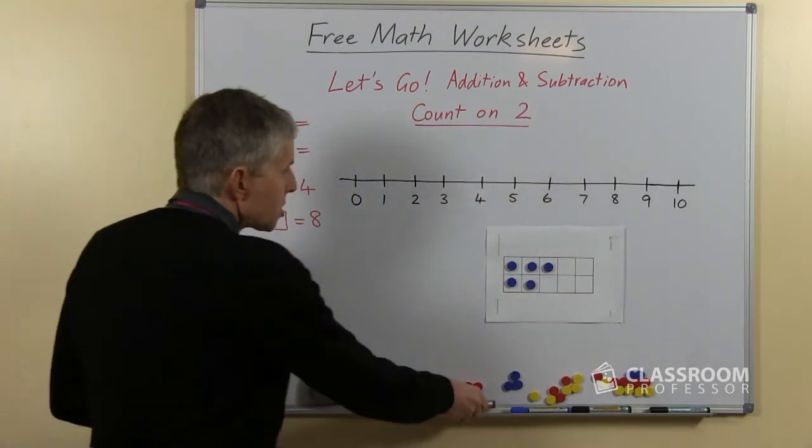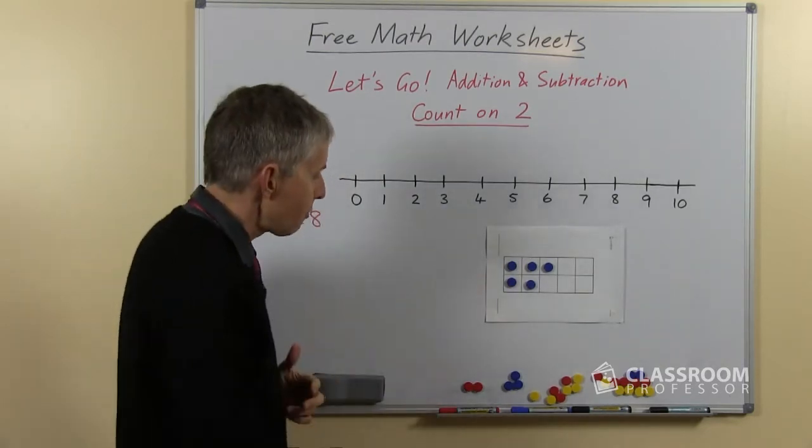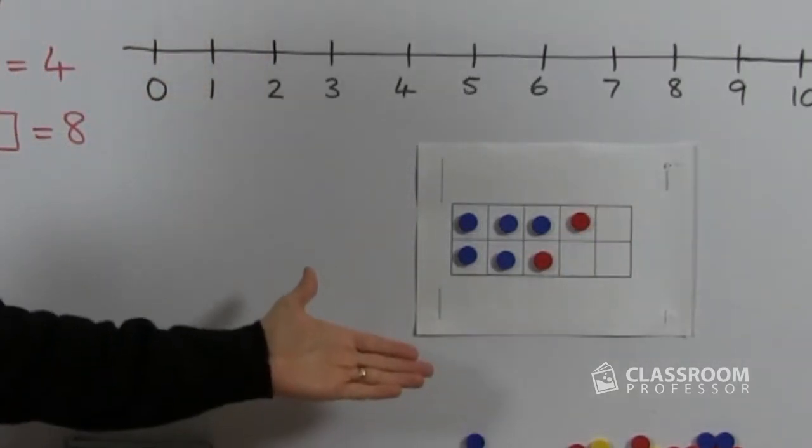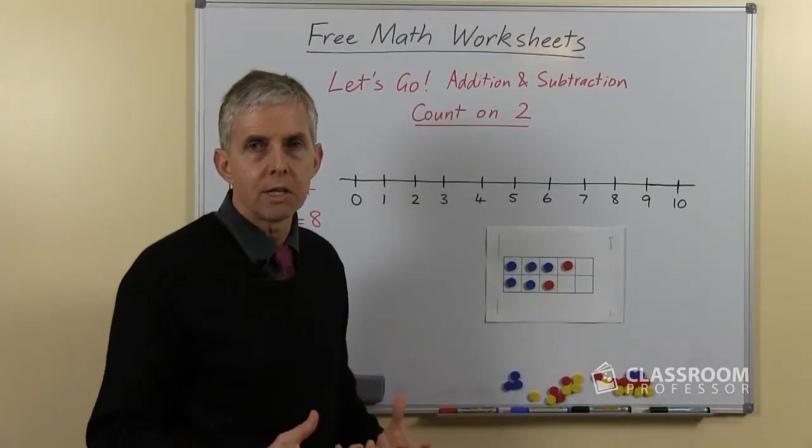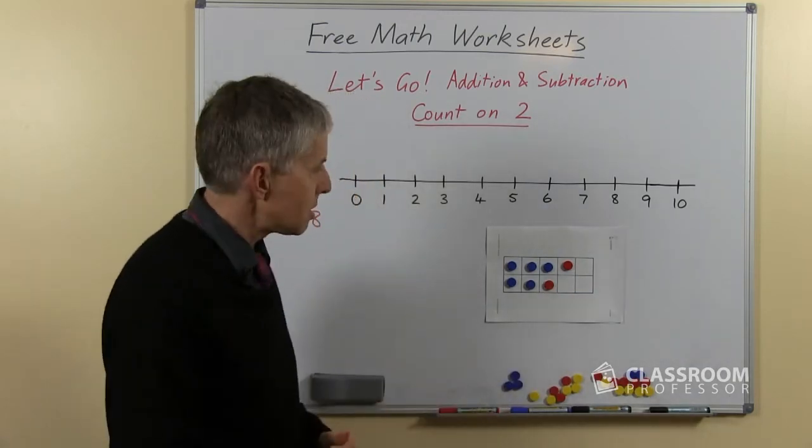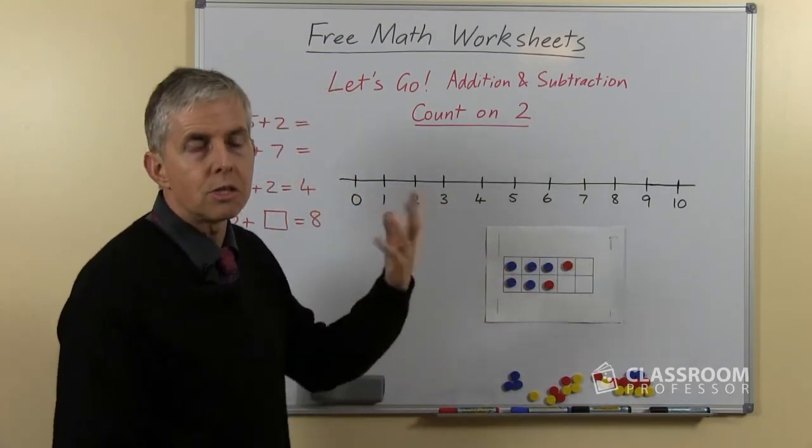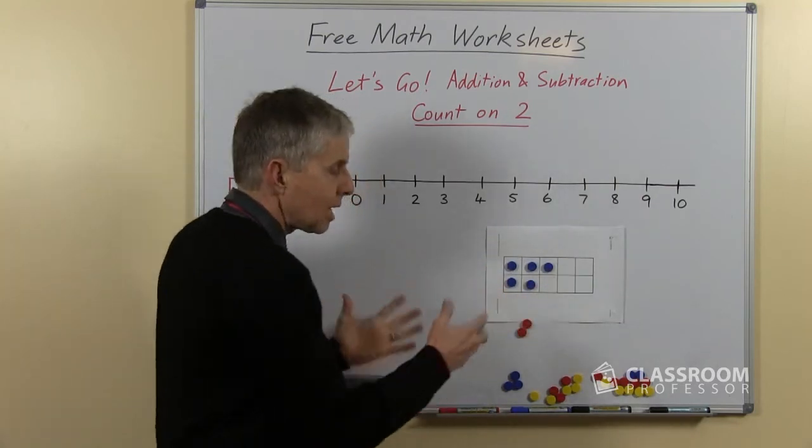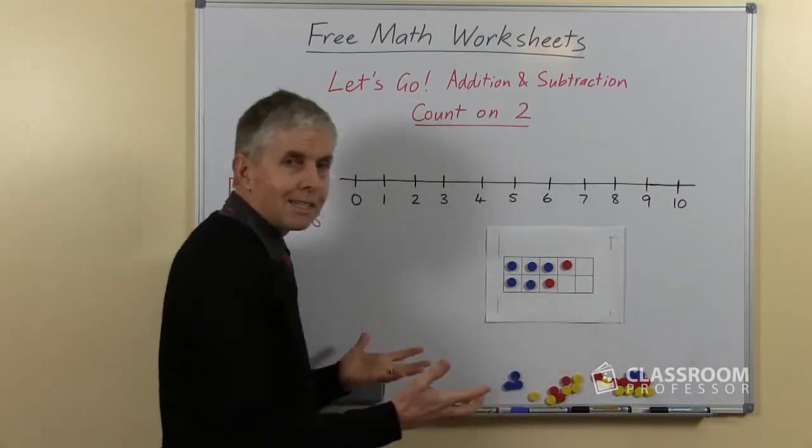So with the 10 frame, let's look at that. If we had 5 plus 2, the same example, using the 10 frame we'd put out 5 counters, and to start with we would say, right, now put out another 2 counters. How many do we have now? The 10 frames are a wonderful resource for helping students develop their understanding of numbers up to 10, and then you can add another frame for numbers up to 20. It works so well because it's an ordered structure that allows you to subitize or recognize the numbers without actually counting them. So they should be able to see that's 5 once they are familiar with 10 frames, and they'll be able to see that that's 7.